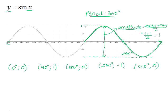Looking at some of the negative values: there is a point at negative 90 and negative 1, at negative 180 and 0, at negative 270 and positive 1, and then again at negative 360 and 0. Connecting those points generates the sin graph on the negative side.